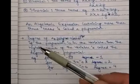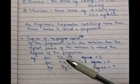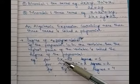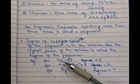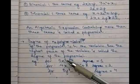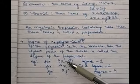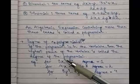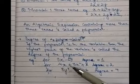Now, degree of a polynomial. If a polynomial is in one variable, the highest power of that variable is called the degree of the polynomial. For example, 9x minus 19 is a binomial with one variable x. Since nothing is written as the power of x, the power is 1 by default. So the highest power is 1, and its degree is 1.